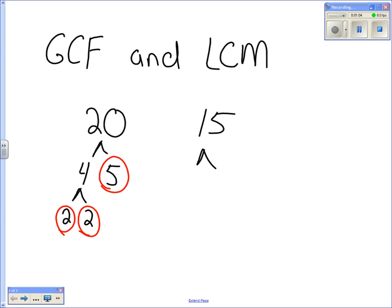Alright, 15. Broken down into what? Three and five. Three and five. Do I circle either one of those? Yep. Both of them. Alright, so here we go. Now that we have, this is going to be 2² times 5, and this is going to be 3 times 5. Okay.